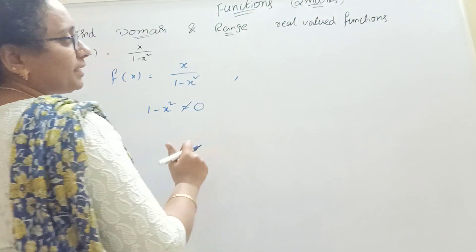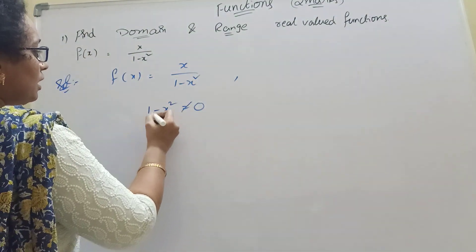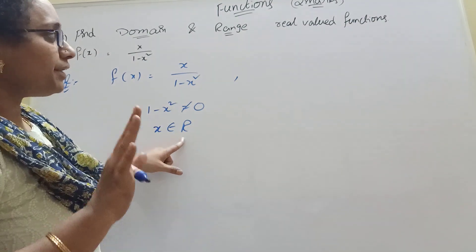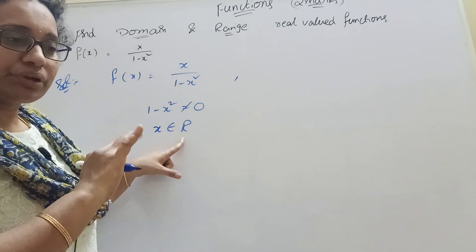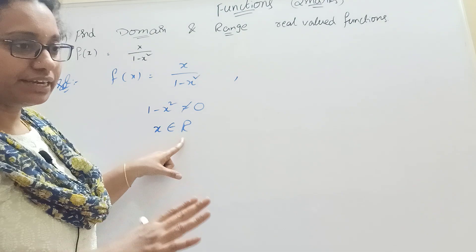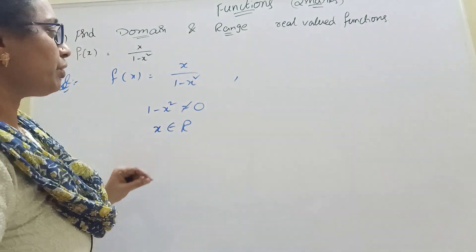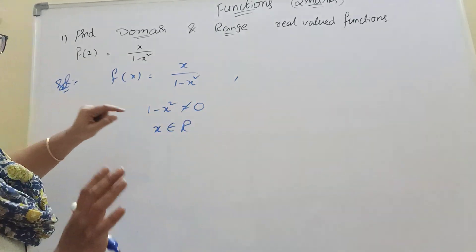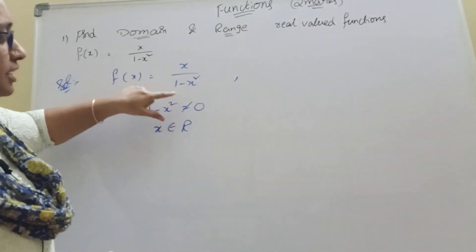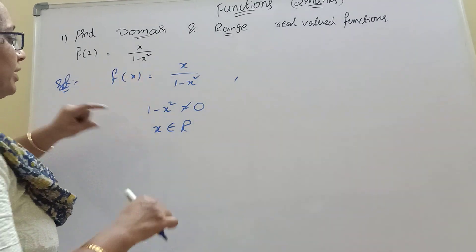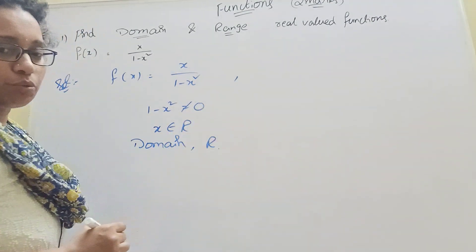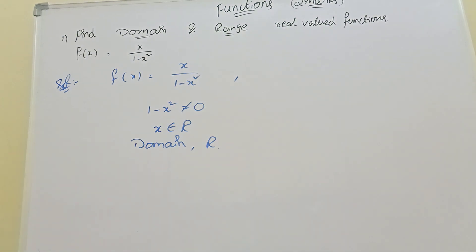Real value function — it belongs to capital R. Real value function — it belongs to integers, whole numbers, natural numbers. That means real value function. And here 1 minus x square is equal to 0. Domain is R.